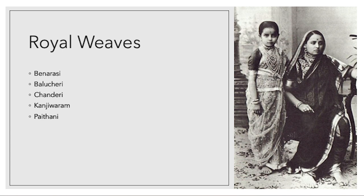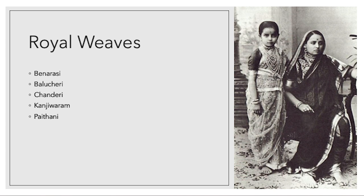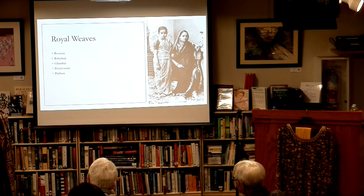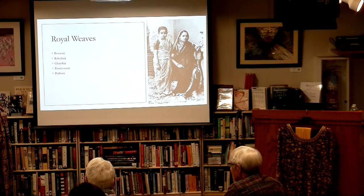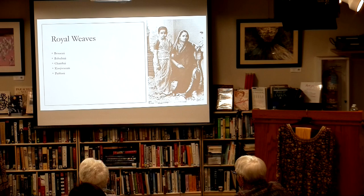Of all 136 weaves, five are considered the royal weaves — the crown jewels — and those are Banarasi, Balucheri, Chanderi, Kanjivaram, and Paitani. We have examples here: this is a Kanjivaram from southern India; this is a Paitani, a brocade-style weaving that is a cousin of the Banarasi — similar weaving technique but different motifs. This is a Chanderi, which has the most amazingly soft silk in the lightest quality you can imagine.